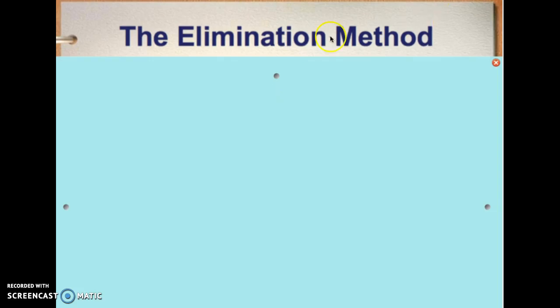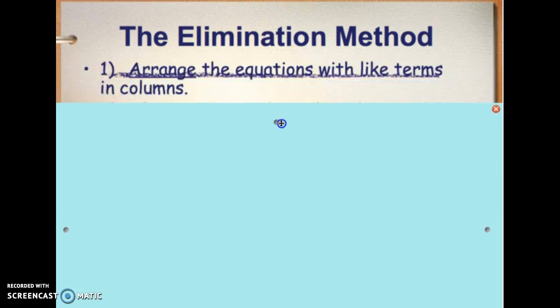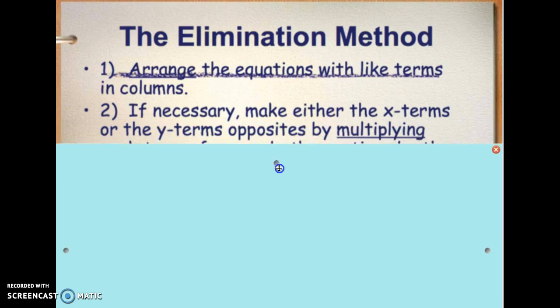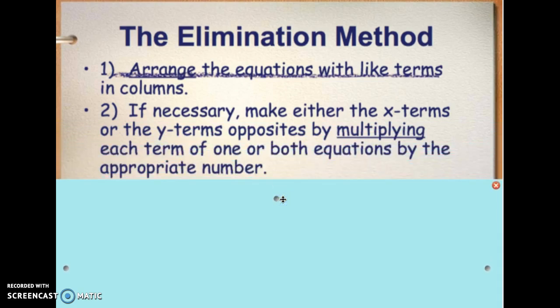So elimination method, the first step is we need to arrange the equations with like terms in columns. It's typical to put them in standard form. Second, you need to make either x terms or y terms opposite, and you have to choose a strategic number to multiply both by to make that happen.